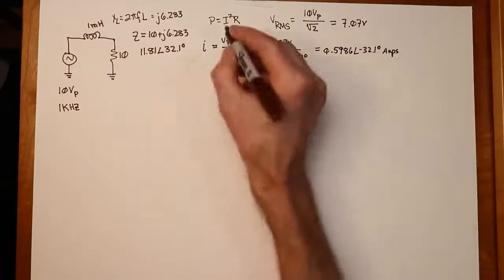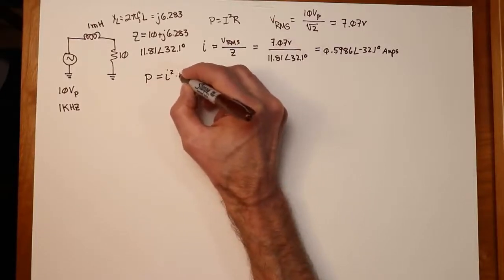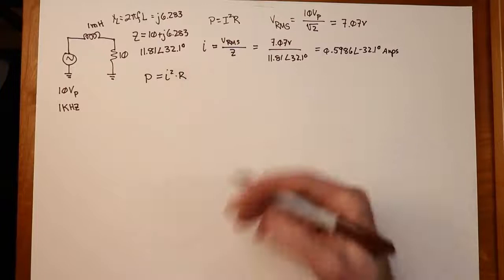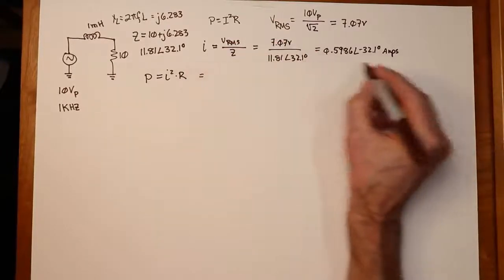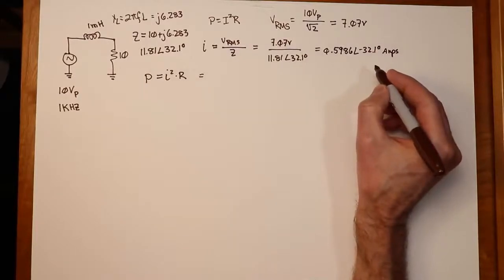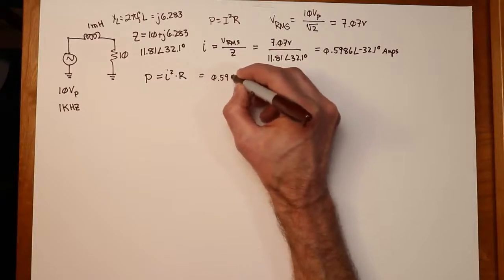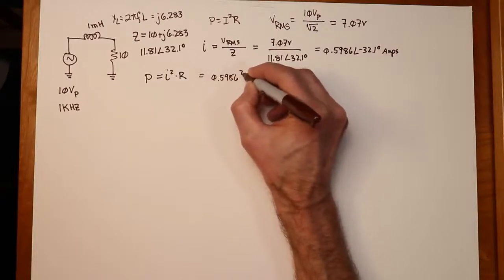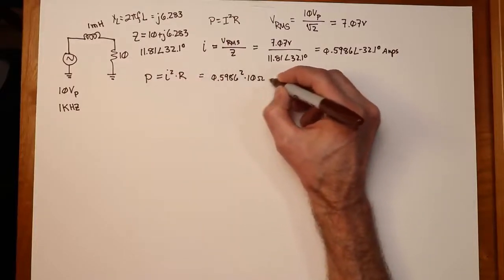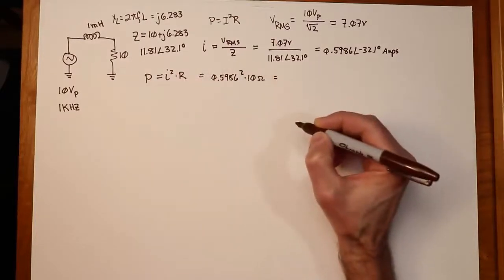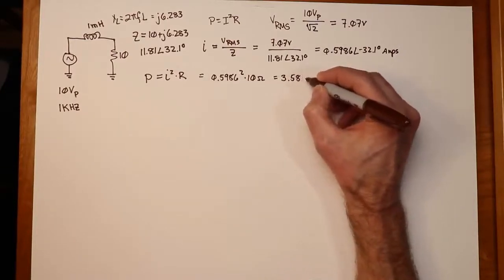Great. Now the power, we're simply going to do I squared times R for the true power piece, the power developed in the resistor. So just take the 0.5986, that part of it, square it, multiply that by your resistance value of 10 ohms. And that works out to approximately, rounding this off to three digits, 3.58 watts.